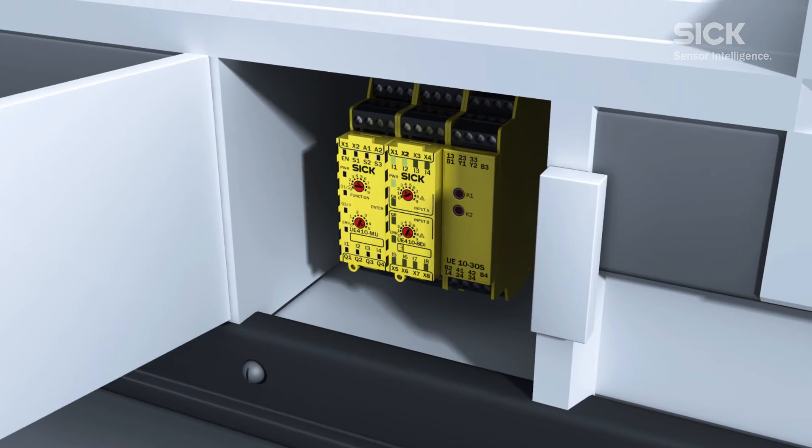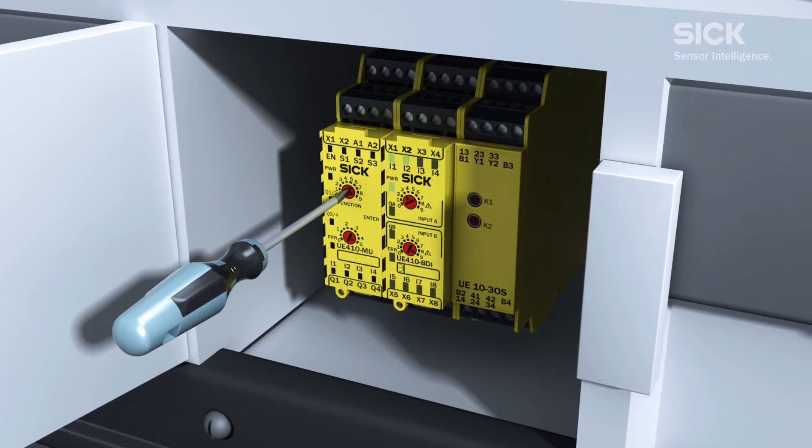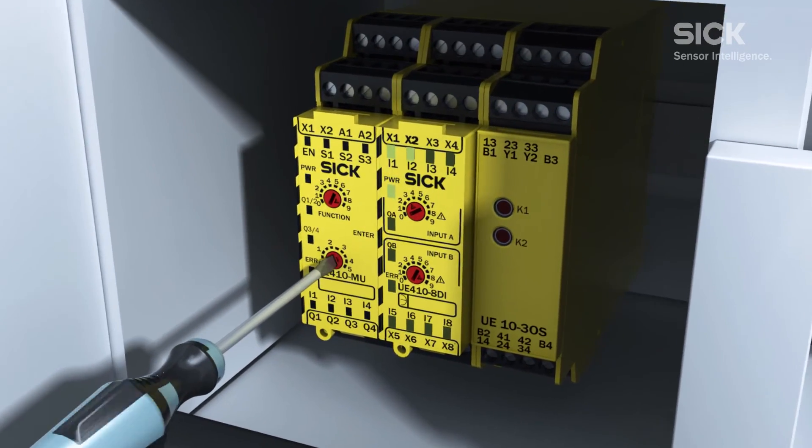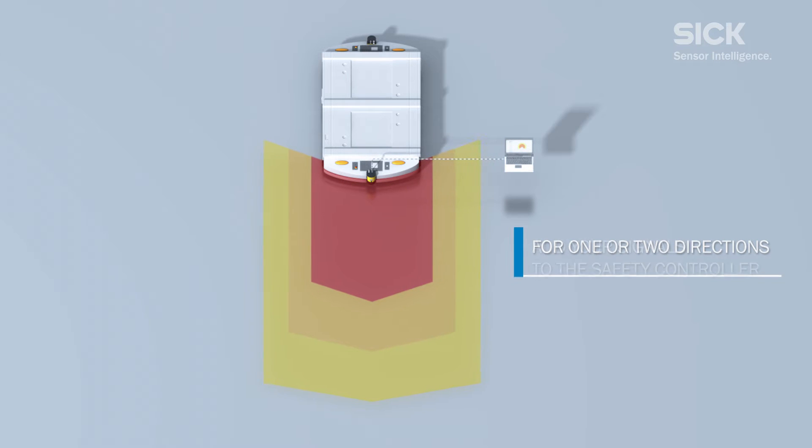The combination of the Flexi Classic and S300 allows for almost instantaneous configuration. SAFE AGV Easy is fully compatible with your existing safety concept and can be individually adjusted to your requirements.